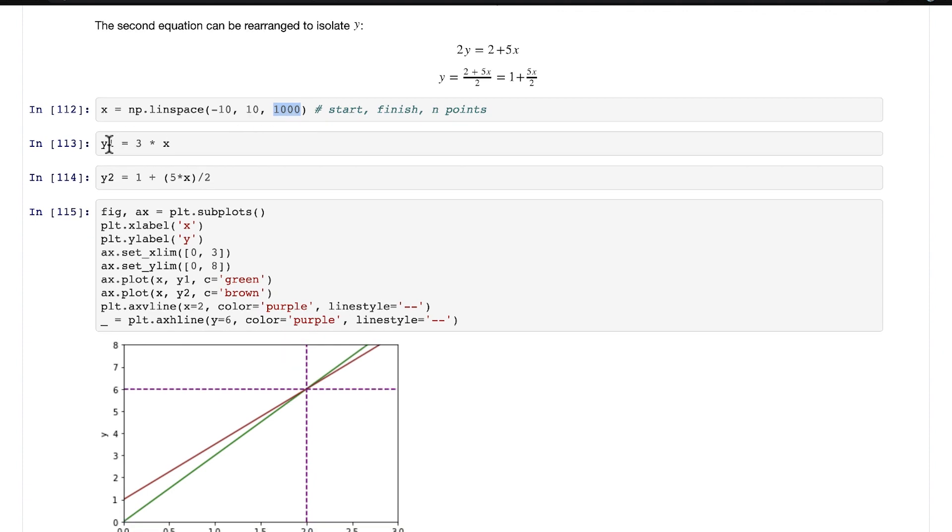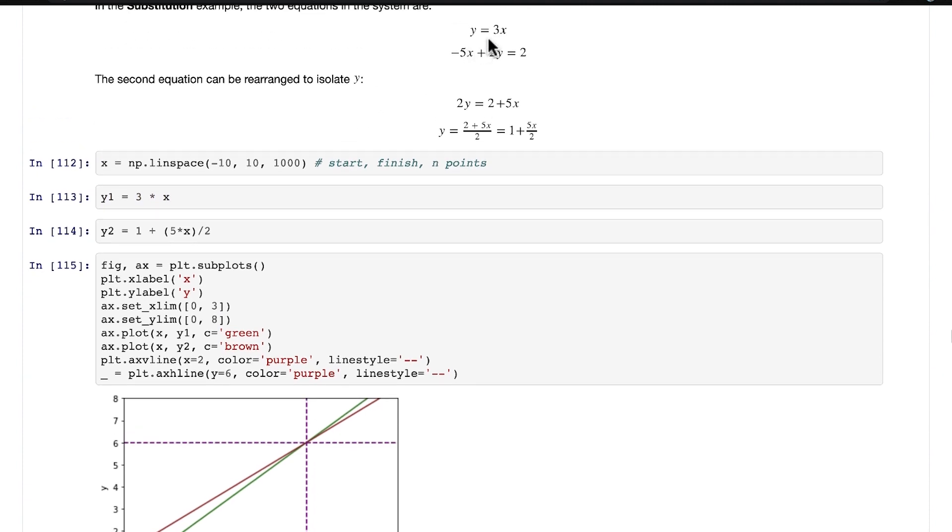Then we use our two equations. So our first equation is y = 3x, so I'm going to call it y1 = 3 * x. And then for our second equation, y2 is here, so we have y = 1 + 5x/2. y = 1 + 5 * x / 2.